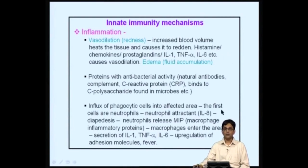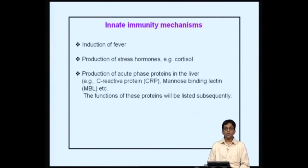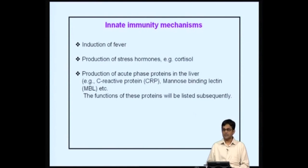Fever increases body temperature, which is not suitable for microbial growth. Key mechanisms include induction of fever by cytokines such as IL-1, production of stress hormones like cortisol (which is thought to suppress immune responses as part of a regulatory network), and production of acute phase proteins in the liver. Well-known acute phase proteins include C-reactive protein and mannose-binding lectin, all of which have antimicrobial functions. Their detailed mechanisms will be discussed subsequently.